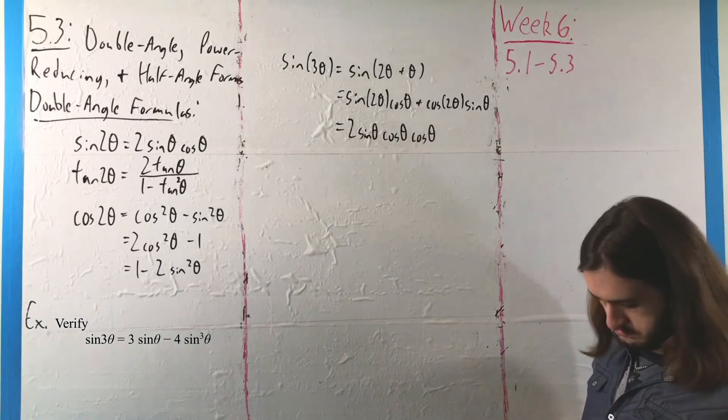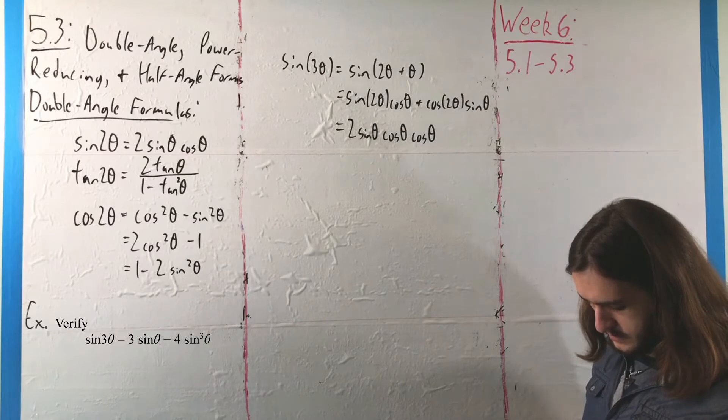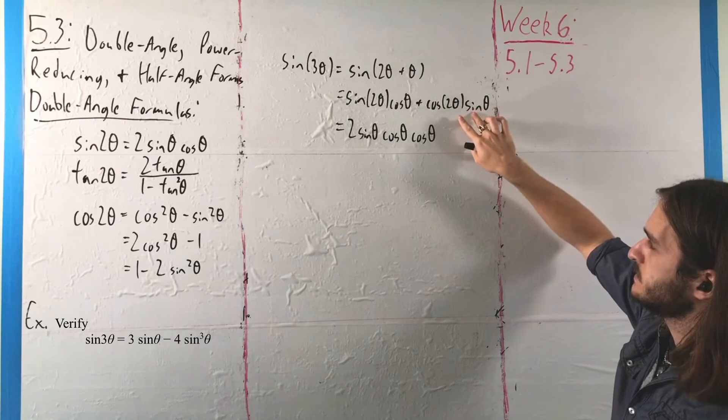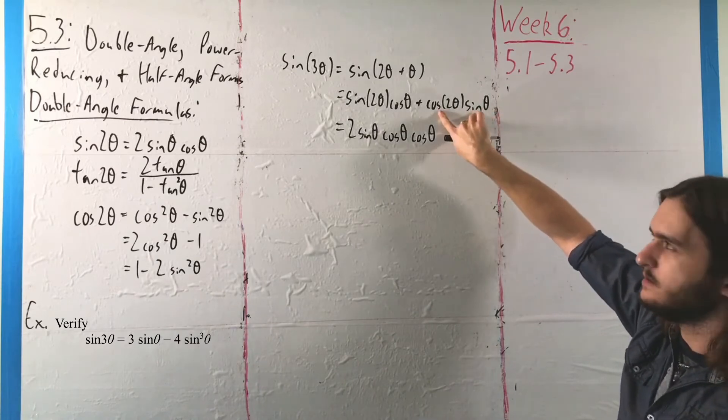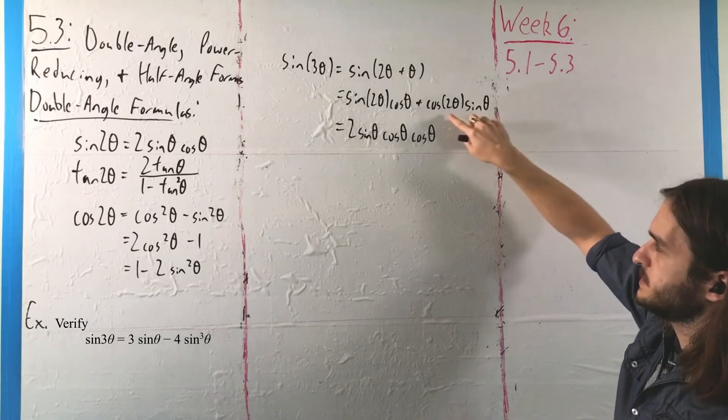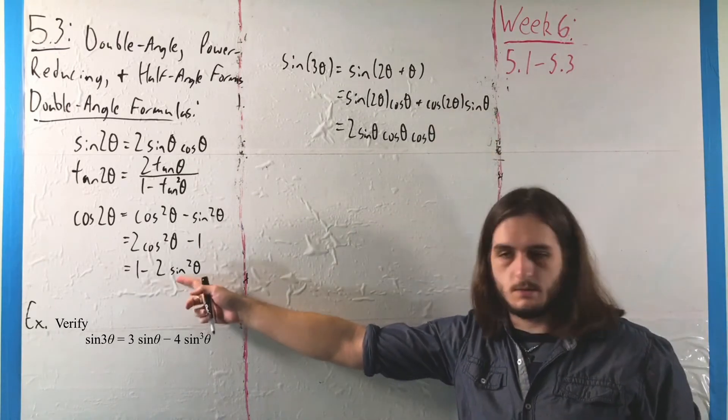Second term though, well, I've got a few options. And what I see there is there's a sine, there's a cosine, and the angle's different. I don't like that. So I want to be able to turn this into something with sines. So I'm going to use this third term.